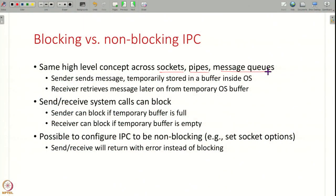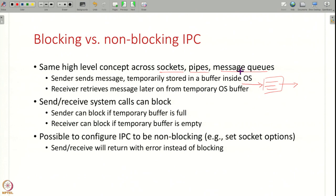Across sockets, pipes, and message queues, the high-level concept is the same: one process sends a message, it is temporarily stored in a buffer inside the OS — whether a pipe buffer, socket buffer, or message queue — and another process reads from that buffer later using system calls. Minor differences include: sockets are bidirectional while pipes are unidirectional, and message queues are somewhat asynchronous — you can post a message and another process reads it later.